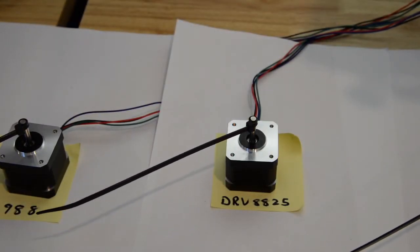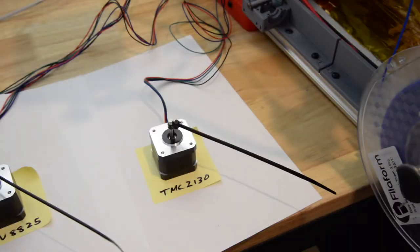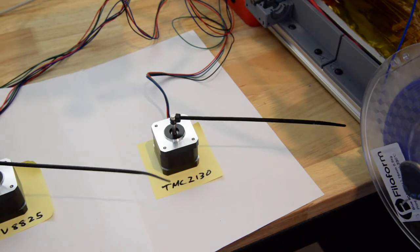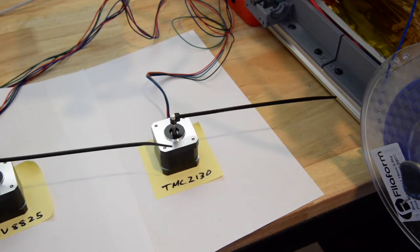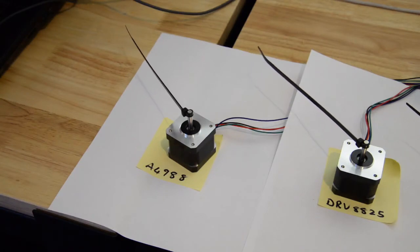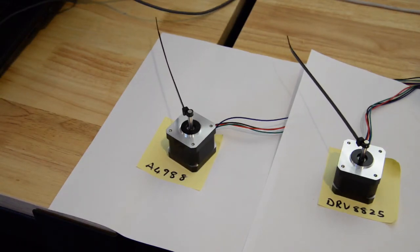You can see the DRV8825 is vibrating a bit. In this setup, the DRV8825 is set to 160 steps per millimeter, the TMC2130 is 80 steps per millimeter, and the A4988 is also 80 steps per millimeter. You can see it's much smoother than the DRV8825.